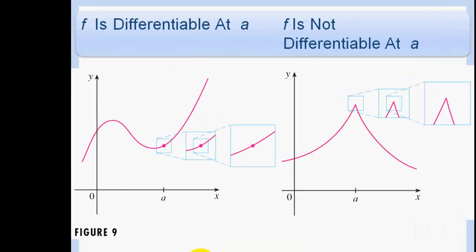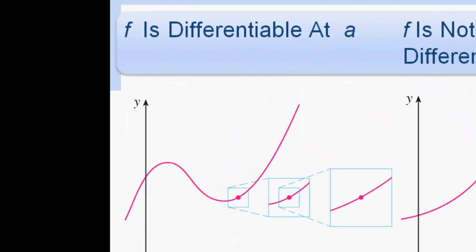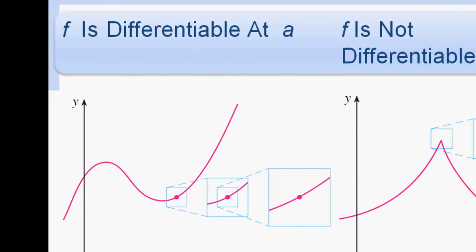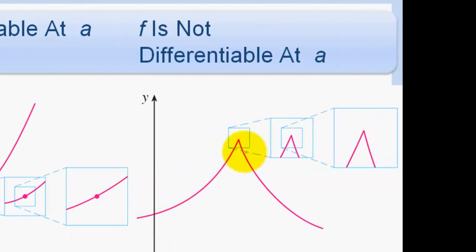Whenever f is differentiable, if you zoomed in on the function really, really close, you would see that the function right there at that point looks almost linear if you zoom in enough. That little line is the slope of the tangent line at that point. At a cusp or somewhere that it fails differentiability, if you zoomed in closer and closer you're never going to get it looking like a line.